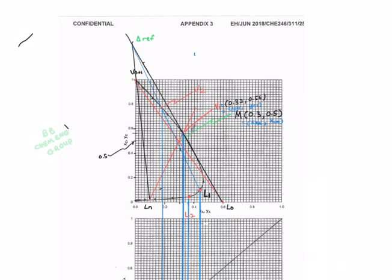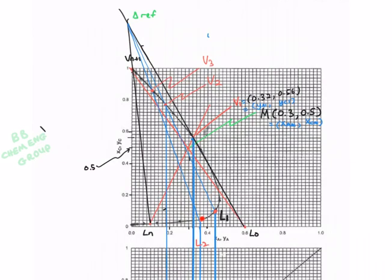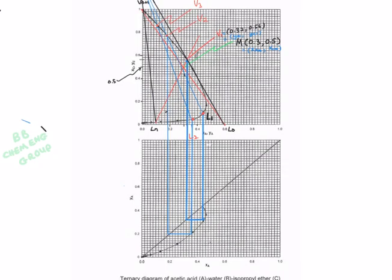Now draw a straight line from L2 to the reference point. From L2 point we can get V3. From V3 we can get L3.